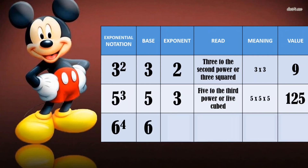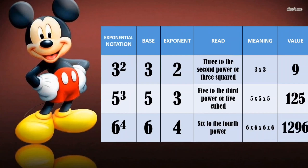Next, our base is 6 and 4 is the exponent. We will read it as 6 to the 4th power. Meaning, 6 times 6 times 6 times 6. And the value is 1,296.